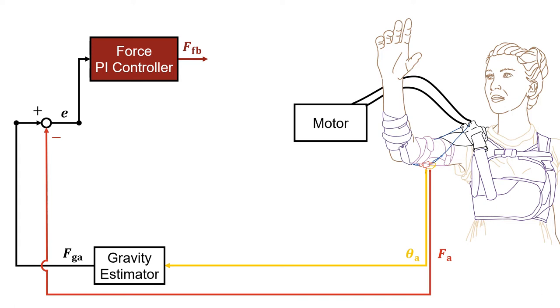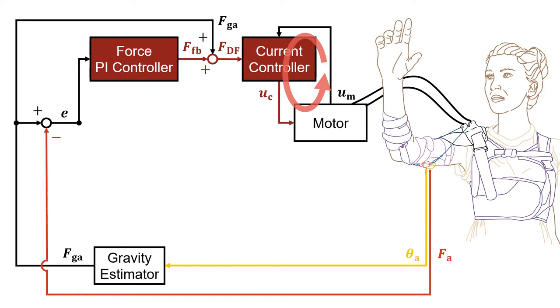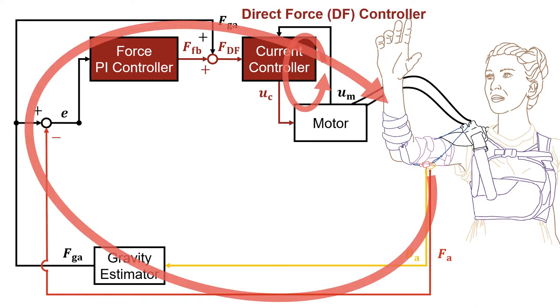For the first controller type, the force feedback was set by a PI force controller. Summed up with the gravity estimator reference, the direct force reference was fed to the lower level motor current controller, therefore closing the outer direct force controller loop.